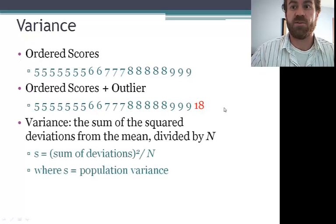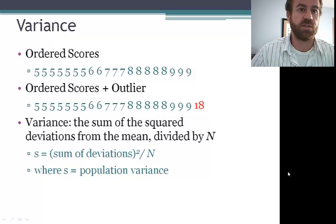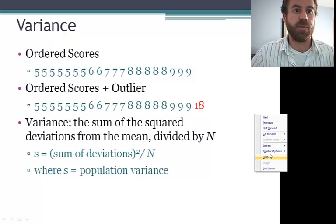Variance is how far a set of numbers is spread out from the mean. It's calculated by the sum of the deviations squared divided by the number of scores. So in this case, we have to first calculate the deviation of each score. This is the distance of the score from the mean. And we're going to leave out the outlier to do this. So I'm going to show you how to do this using Excel.